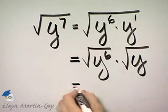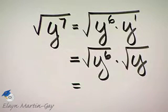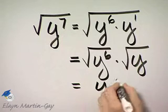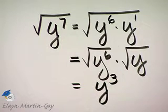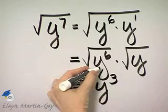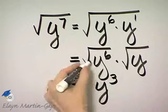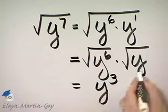Then I will simplify the square root of y to the 6th. The square root of y to the 6th is y cubed, because if I square y cubed, I have the radicand y to the 6th. So the square root of y to the 6th is y cubed.